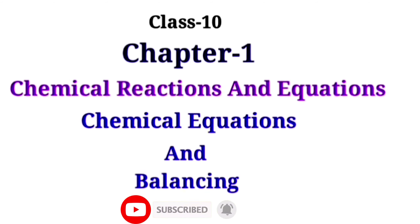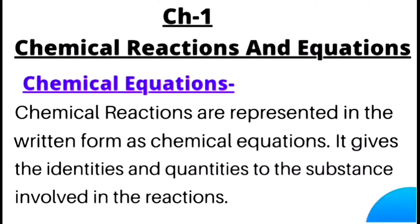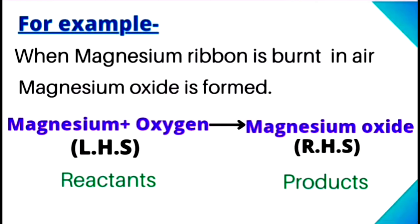In this video we are going to start with a very important topic: chemical equations. Chemical reactions are represented in written form as chemical equations. Jo bhi chemical reaction hoti hai unko written form mein chemical equation ke dwara represent kiya jata hai. It gives the identities and quantities of the substances involved in the reaction — kissi bhi reaction mein jo bhi substance involved hote hain unki identity aur quantity ko chemical equation represent karta hai.